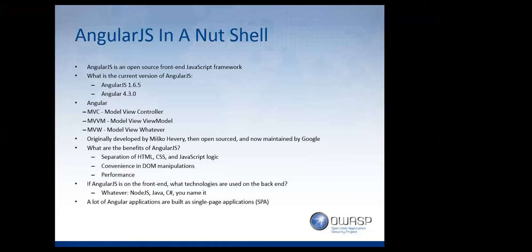In the world of AngularJS there's also the concept of Model View Whatever — whatever it means to you. There are services, factories, and all these different things. It was originally developed by Misco Hevery, then open sourced and maintained by Google. The benefits are that it separates HTML, CSS, and JavaScript logic, and it offers convenience of DOM manipulations through directives like ngClick. It's quite fast and generally used for single-page applications, giving a fluid experience through deep-embedded links.